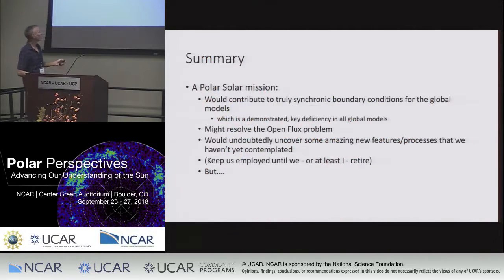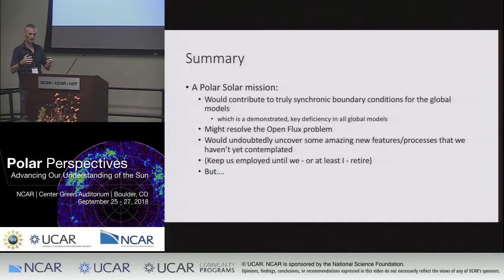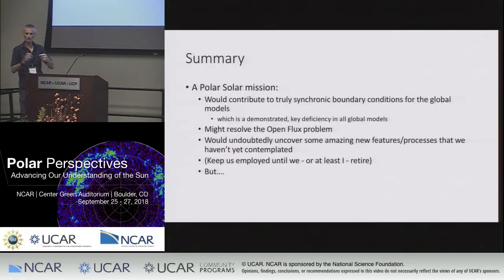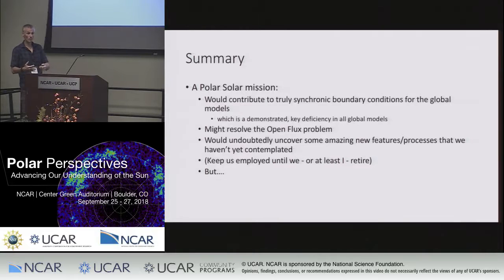So what would a polar mission see above the poles? Hopefully we'd see something that would help us understand why we have this open flux problem and fix it. In general, to summarize: it would contribute to a more synchronic set of maps — observations of the entire sun at the same time, not built up over a Carrington rotation. The MHD calculations need to have the entire boundary condition specified at one time. We've demonstrated over the years through different mission concepts from Sentinels through L5 missions why this really is a key deficiency of the models.